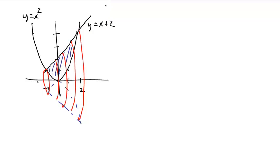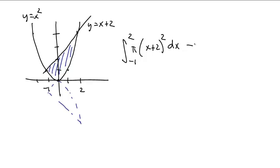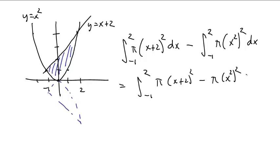Anyway, the volume is pretty simple. We can just integrate the outer one, the integral from negative one to two of π times x plus two squared dx, and then subtract out the part that we don't want, the integral from negative one to two, π of x squared squared dx. But of course, because we do have the same limits of integration, and we can factor out a whole lot of stuff, this is the integral from negative one to two of π times x plus two squared minus π times x squared squared dx.